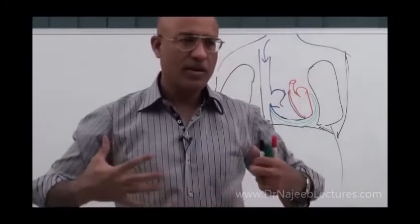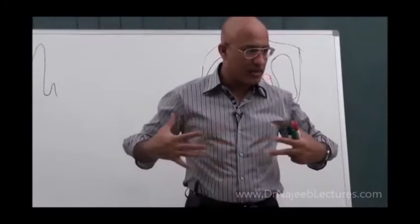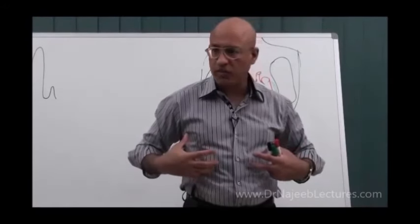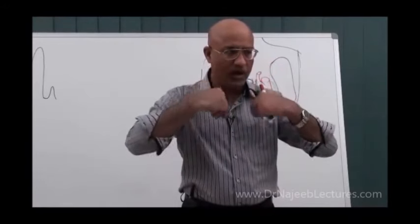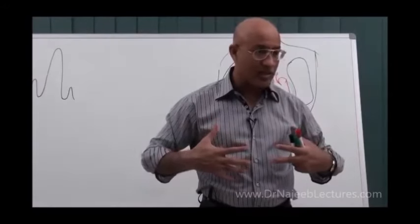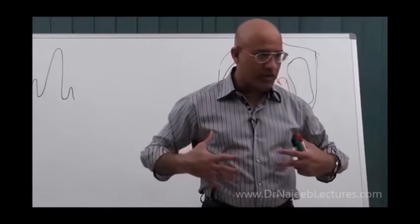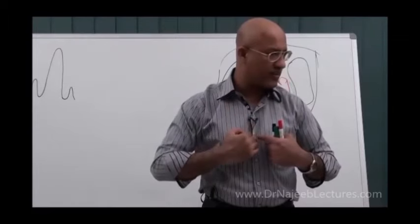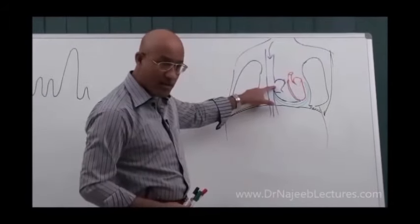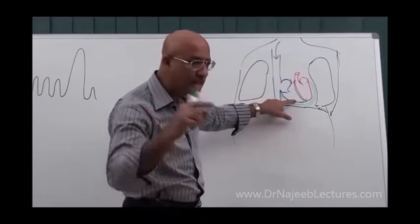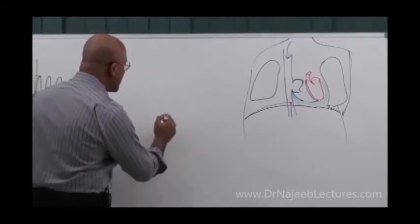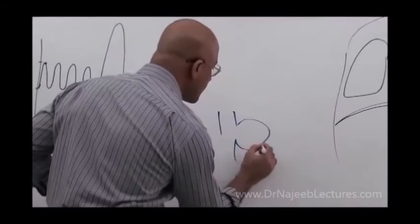During inspiration, the chest is expanding, thoracic cavity is expanding, and intrathoracic pressure becomes negative. As the cavity enlarges, the more negative intrathoracic pressure also pulls venous blood from the superior and inferior vena cava. So venous return to the right heart during inspiration is more.